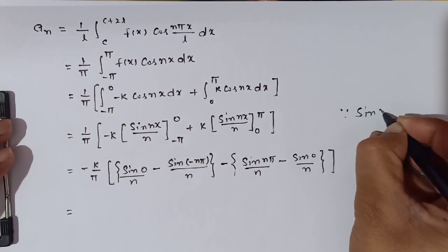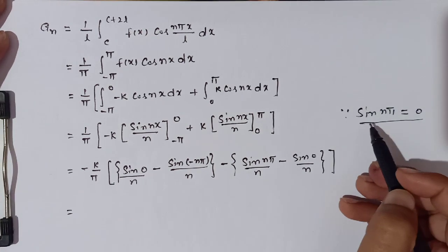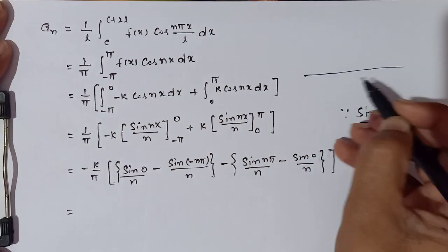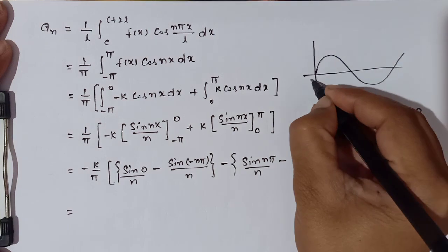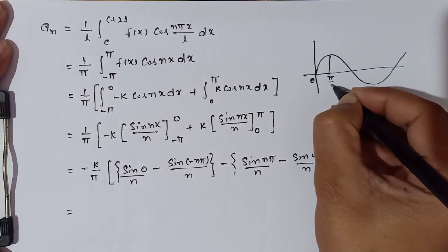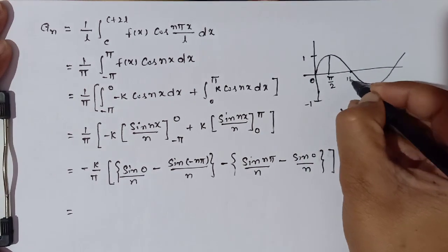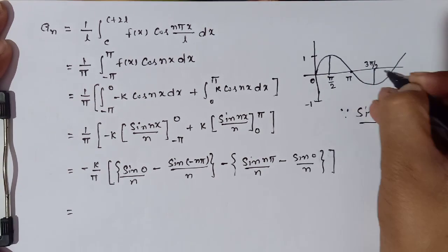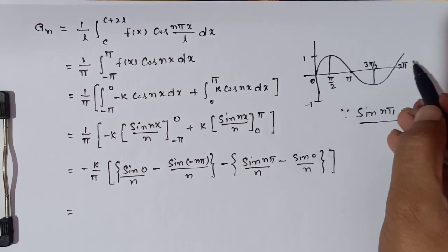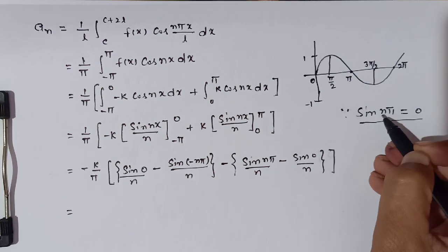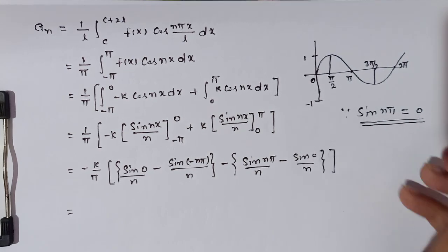When we simplify, sin(nπ) = 0 for all integer values of n. Let me explain: looking at the sin graph, it passes through 0 at 0, π, 2π, and so on. So sin(nπ) = 0 for all integers n = 0, 1, 2, 3, 4. Also sin(-θ) = -sin(θ), so sin(-nπ) = -sin(nπ) = 0 as well.